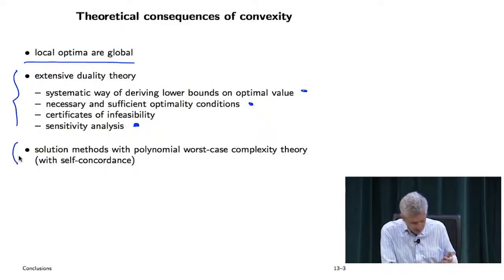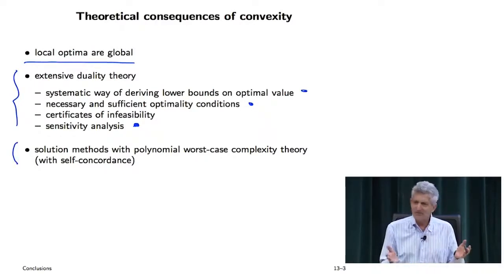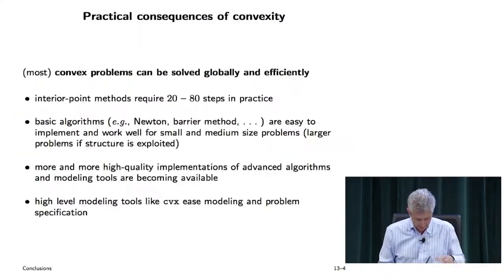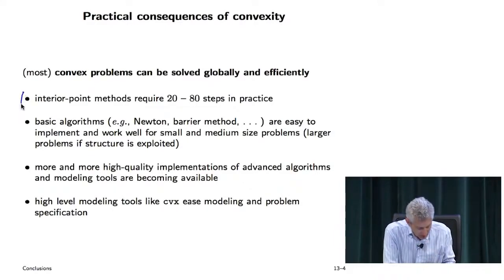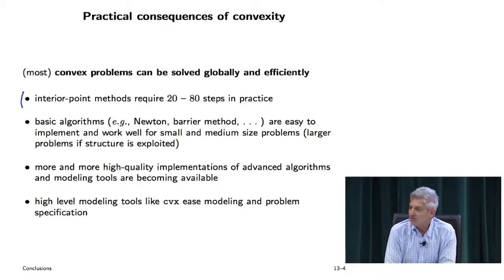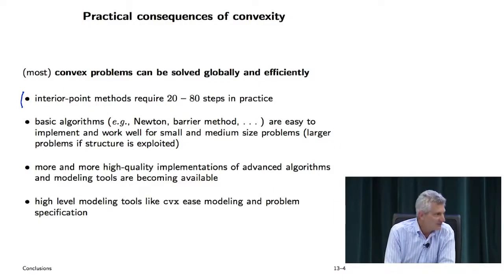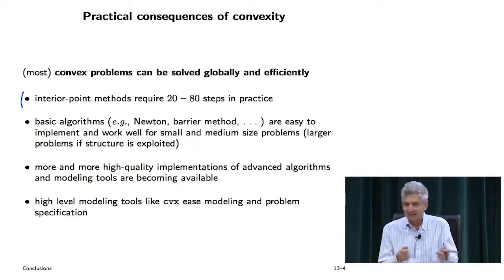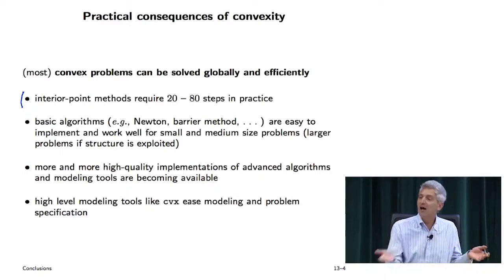You have solution methods with polynomial worst-case complexity theory, via self-concordance. For medium-scale problems, you can solve a problem in about 20 to 80 steps, and each step is basically a least squares problem of the same size. Instead of tweaking parameters in an ad hoc way, you actually say what you want — I want this thing to be positive, I want this in that range — and that tweaking is done in a very sophisticated way.